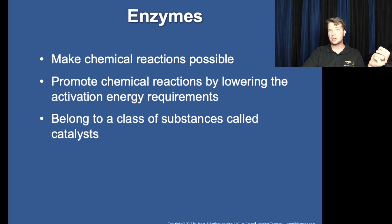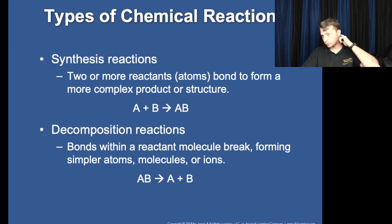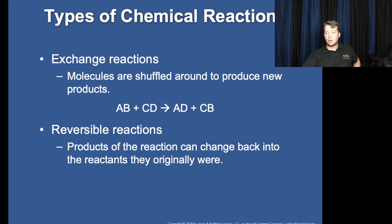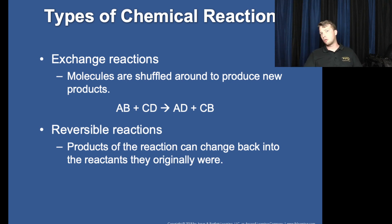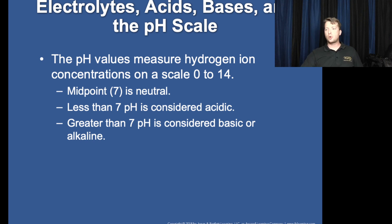Enzymes are proteins needed to reduce the energy required and catalyze reactions, and they can easily be affected by temperature and pH. Know the reaction types: synthesis, decomposition, exchange, and reversible — know what they mean because we'll see these reactions over and over again. And definitely remember the body's pH: 7.4, or the range 7.35 to 7.45.